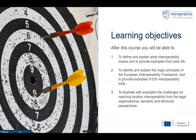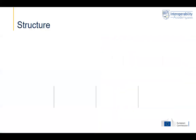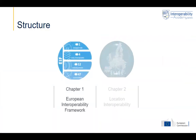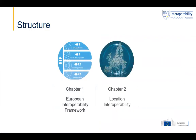The structure of this course is quite simple. There are two chapters. The first chapter will focus on the European Interoperability Framework, which is the general setting for what is then explained in chapter two, focusing on location interoperability.